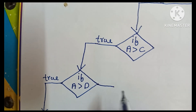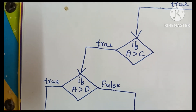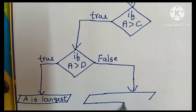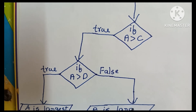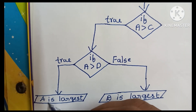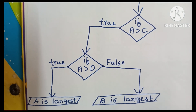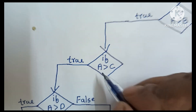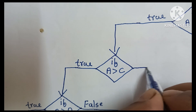If A greater than D is false, we print 'D is largest'. In case A greater than C is false, we move to the next comparison.